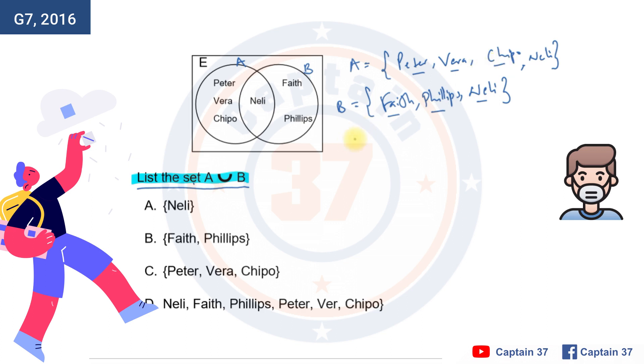So, it will mean that there will be Faith, there will be Philip, there will be Nelly, there will be Peter, there will be Vera, and there will be Chippo. And if you look at the answers that we've been given, you can straight away be able to see that the answer to this particular question is D.